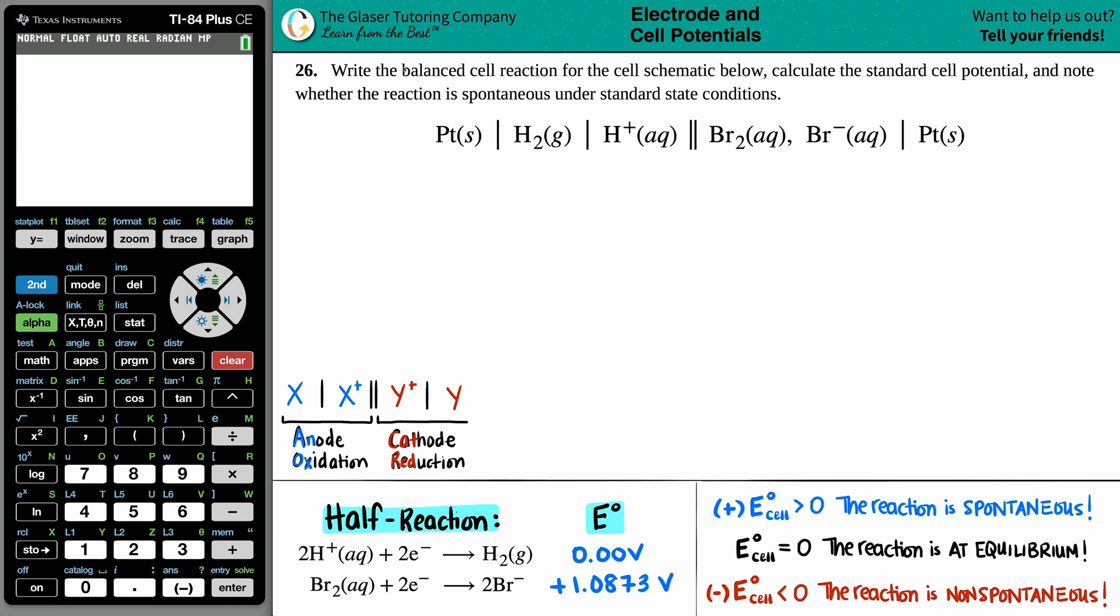Number 26. Write the balanced cell reaction for the cell schematic below, calculate the standard cell potential, and note whether the reaction is spontaneous under standard state conditions.